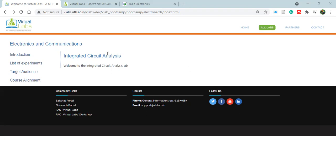To brief, just type in Google Virtual Labs, then the homepage opens up. Scroll below, you get the electronics and communication section. From there, you get to integrated circuit analysis, and you come to this window.